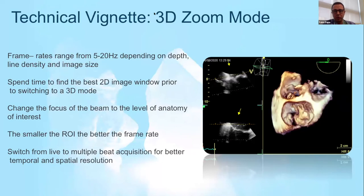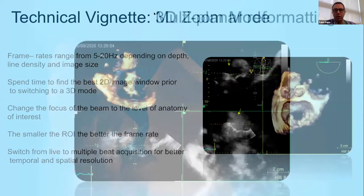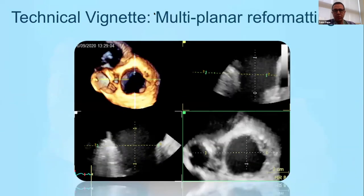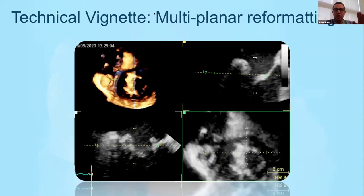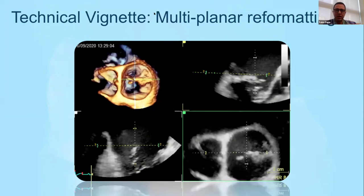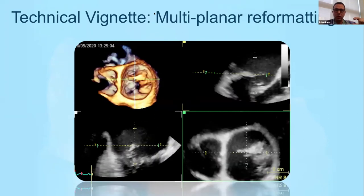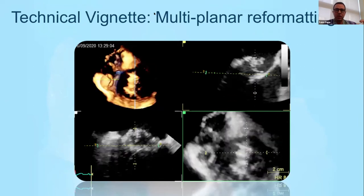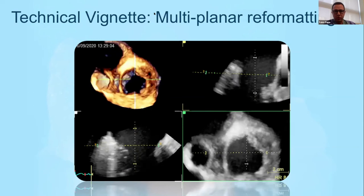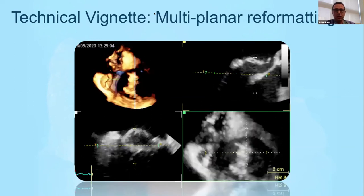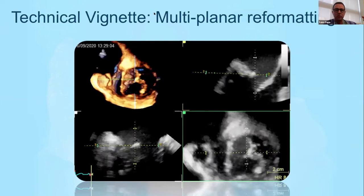Switching to multi-beat acquisition improves both temporal and spatial resolution. We can also use MPR — multiplanar reformation — which allows us to cross all three axes (X, Y, and Z) to slice the valve at exactly the point we are trying to see, precisely localizing the disease. In this example, using multiplanar reconstruction, we get a really good assessment of P3 disease on the valve.